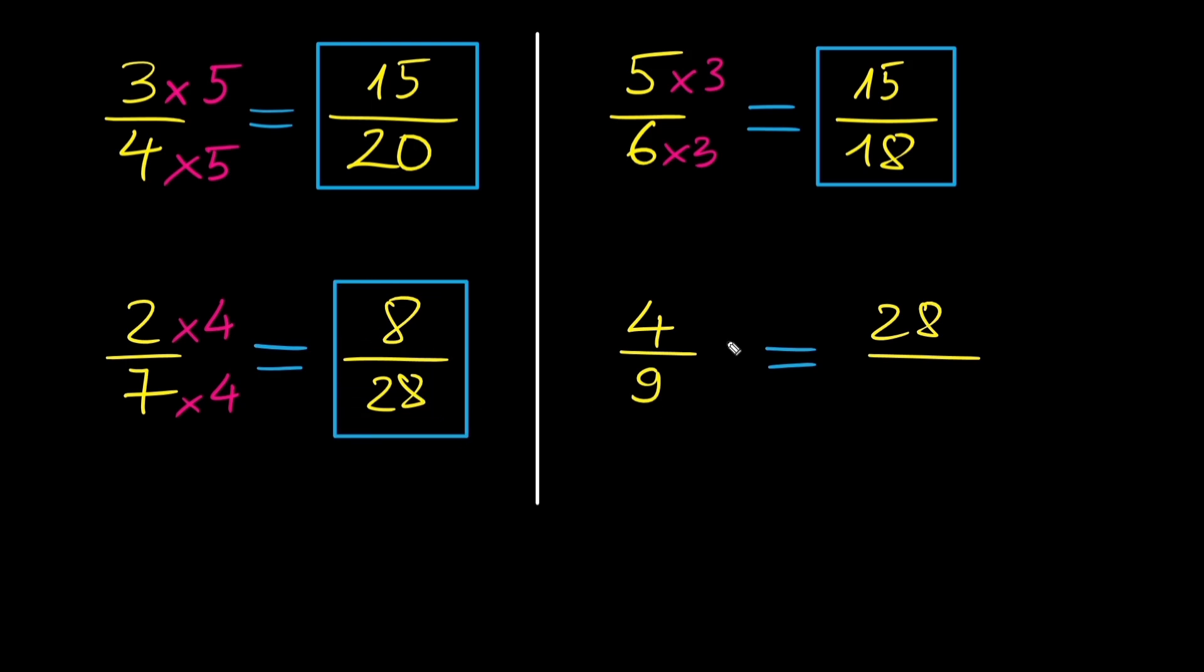Now moving on to the next example, we have 4 ninths equals 28 over what number? 28 divided by 4 is 7. So to get to 28, we got to multiply 4 by 7. Thus 9 times 7 is 63. So 28 over 63 is equivalent to 4 over 9.